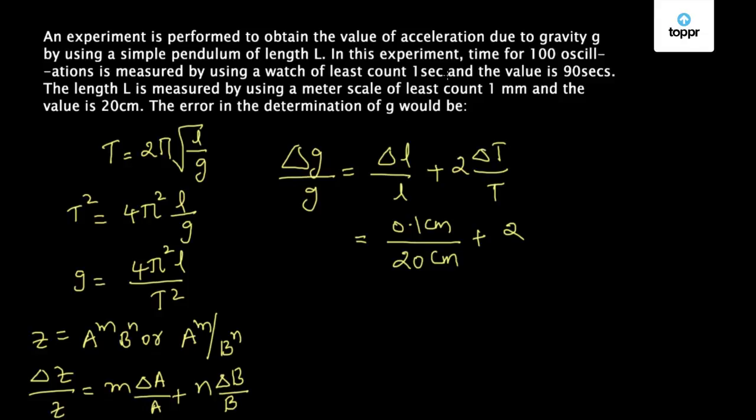The least count of measuring time is given as 1 second, 1 divided by t is 90 seconds.